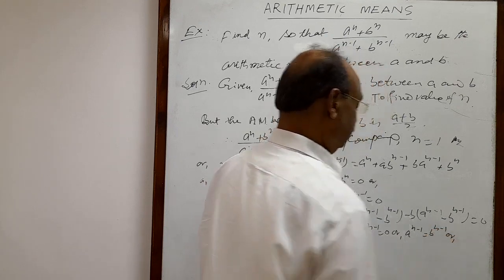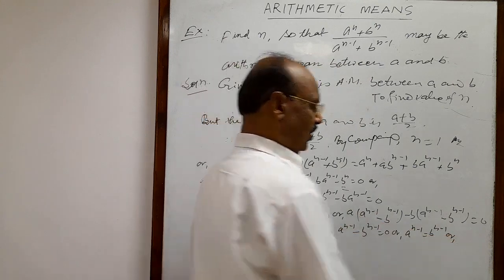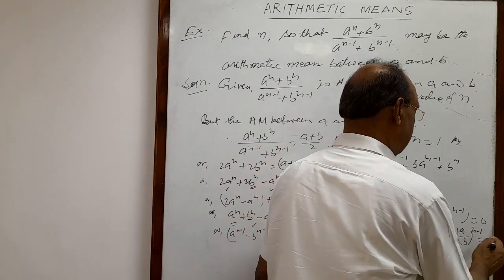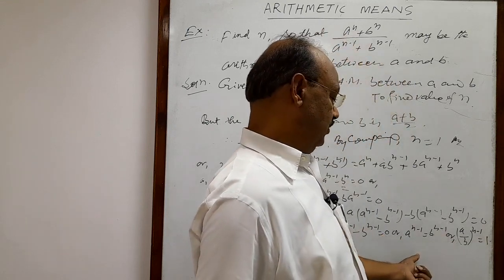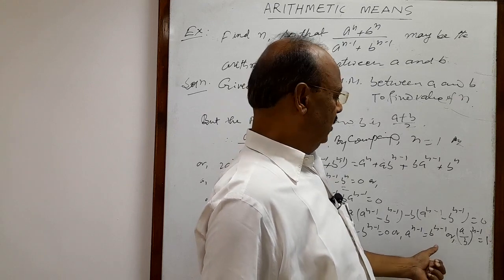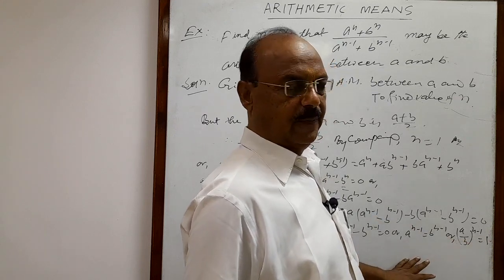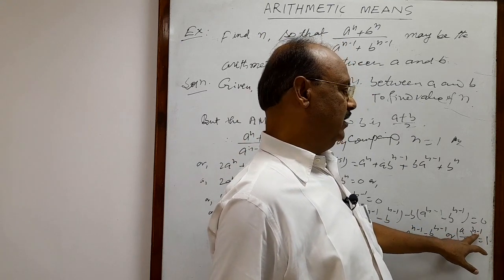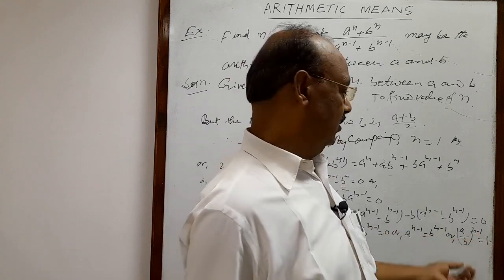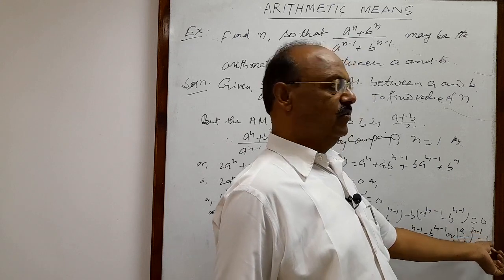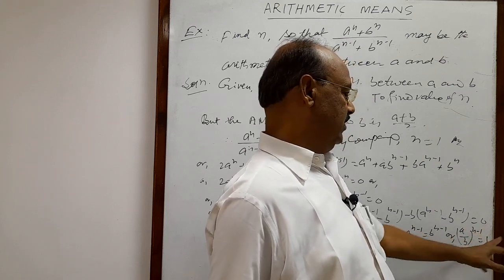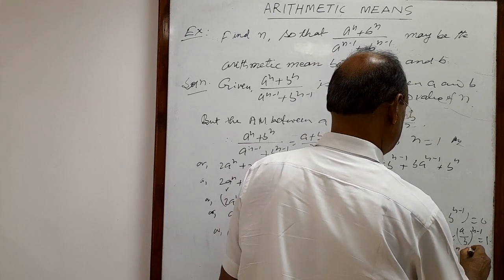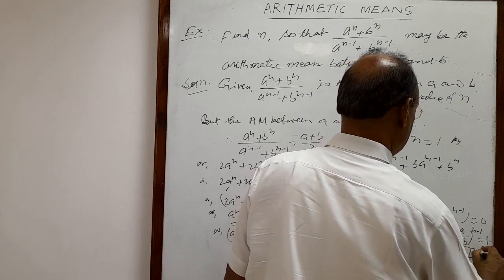Transposing b to the power n minus 1 to the other side — it comes to the denominator — we can write a upon b, whole to the power n minus 1, equals 1. Anything raised to some power being equal to 1 means that the exponent is equal to 0. So clearly n minus 1 is equal to 0, and therefore n is equal to 1. This is the answer.